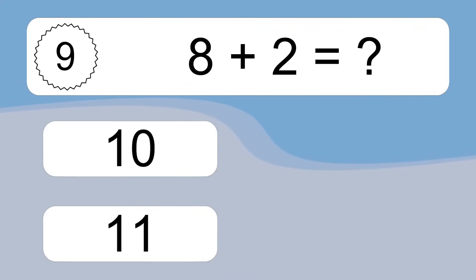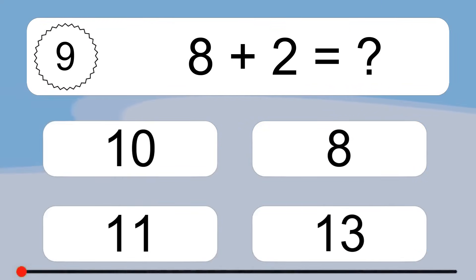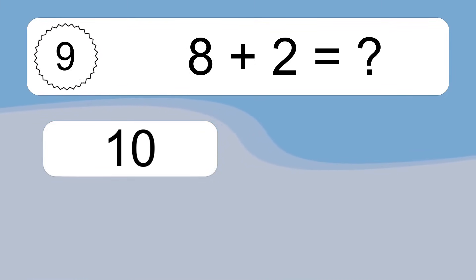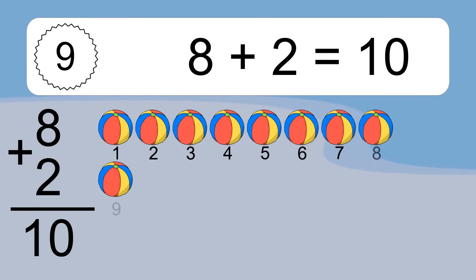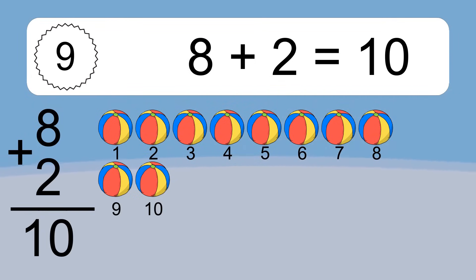8 plus 2 equals what? 8 plus 2 equals 10. Let's count it: 1, 2, 3, 4, 5, 6, 7, 8, 9, 10.